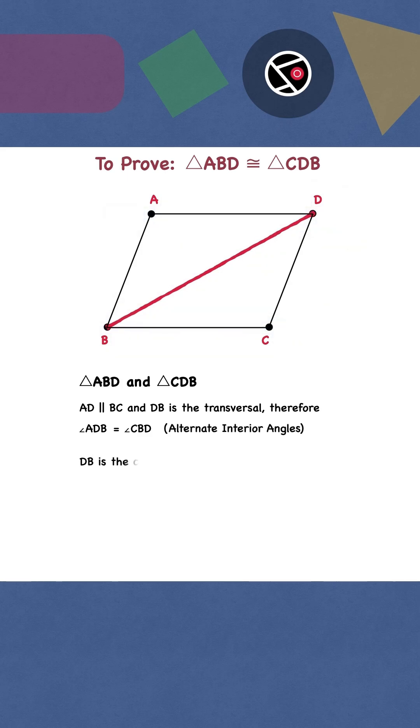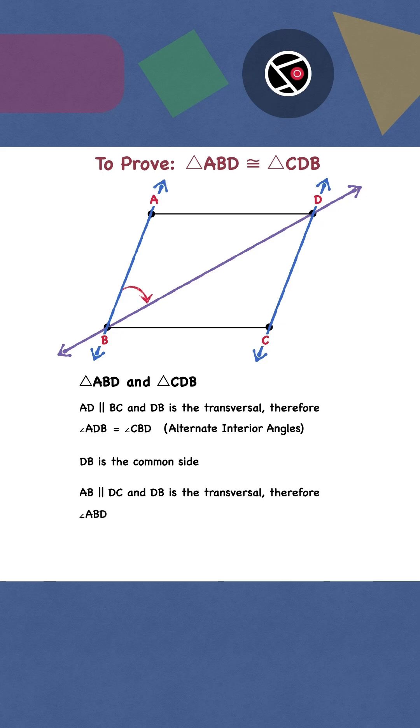DB is the common side. AB is parallel to DC and DB is the transversal. Therefore, angle ABD is equal to angle CDB, alternate interior angles.